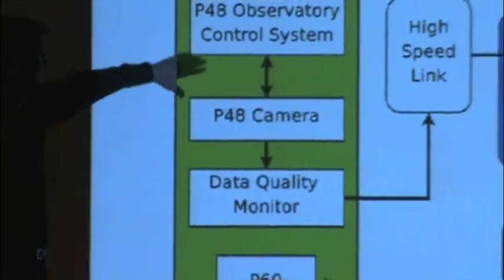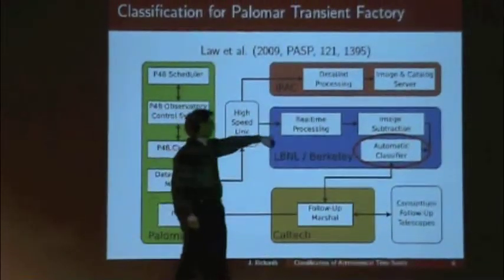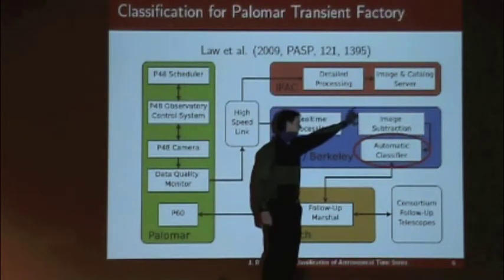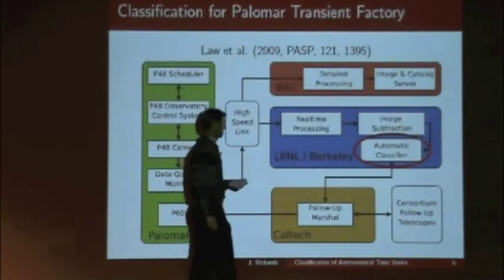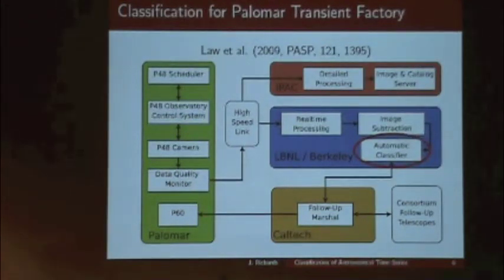I'll start by talking about real-time discovery classification. You obviously heard about the real-bogus problem earlier. I'll give another couple of examples of things we're doing with the Palomar Transient Factory. This is the basic PTF data flow: the initial observation is taken with a 48-inch camera on Palomar Mountain. That information is sent to Lawrence Berkeley Lab where they do all the initial processing and image extraction. Then that information is sent to us at Berkeley.